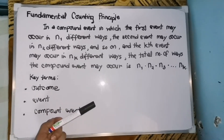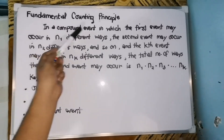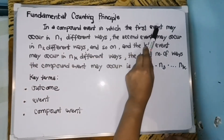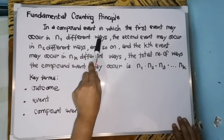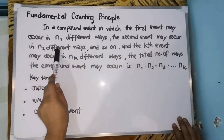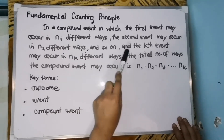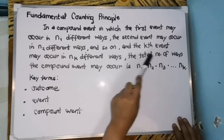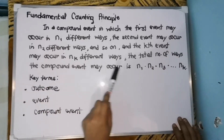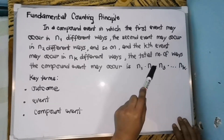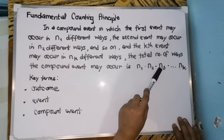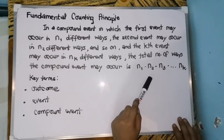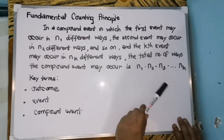Here is our mathematical concept behind FCT. In a compound event, the first event may occur in N sub 1 different ways, the second event may occur in N sub 2 different ways, and so on. The Kth event may occur in N sub K different ways. The total number of ways the compound event may occur is N sub 1 times N sub 2 times N sub 3, and so on, times N sub K. According to our formula, we just multiply each event to get the number of possible ways.